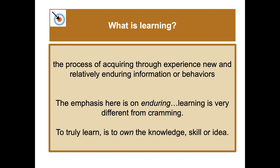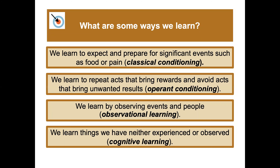What are some ways that we learn? From the perspective of a psychologist, we learn to expect and prepare for significant events such as food or pain — this is classical conditioning. There's also operant conditioning, where we learn to repeat acts that bring rewards and avoid acts that bring unwanted results that punish us.